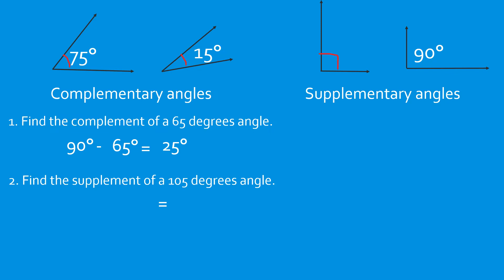How about: find the supplement of a 105-degree angle? This time it's supplement, and we know supplement means 180. So 180 minus 105 equals 75 degrees.